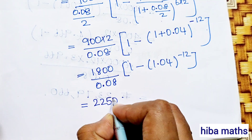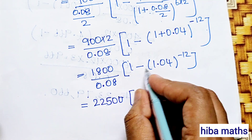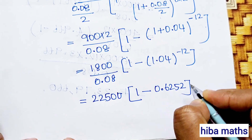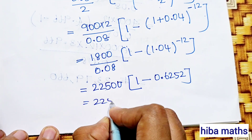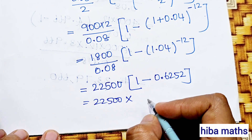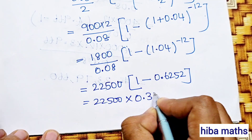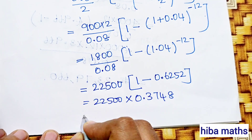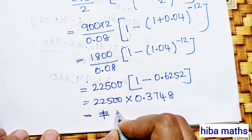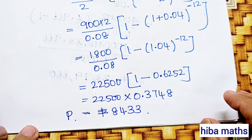This gives 22,500 into 1 minus the value 0.6252, which equals 22,500 into 0.3748, giving Rs.8,433. This is the present value.